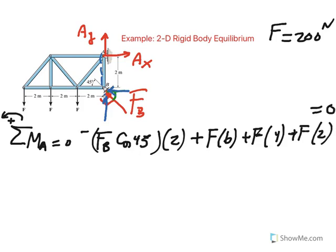Plugging in F = 200 newtons and solving for F sub B — the reaction developed at that roller — it comes out to be approximately 1697 newtons.